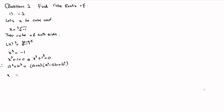So we have x plus 1, times x squared minus x times 1 plus 1 squared, which equals x plus 1, times x squared minus x plus 1, equal to 0.